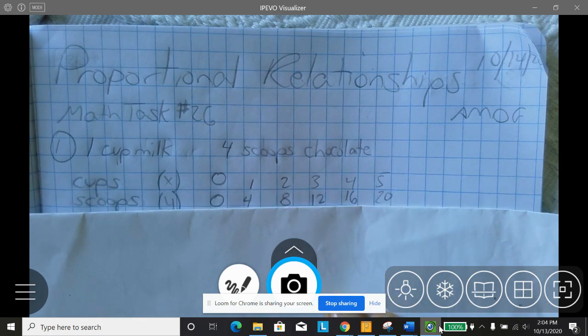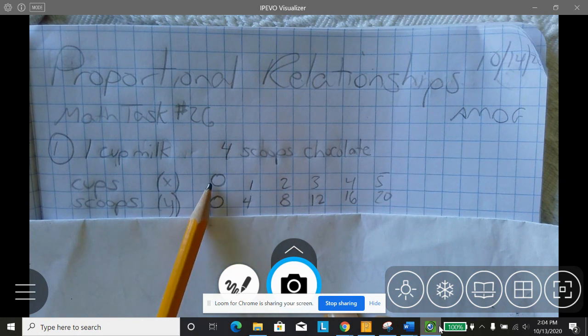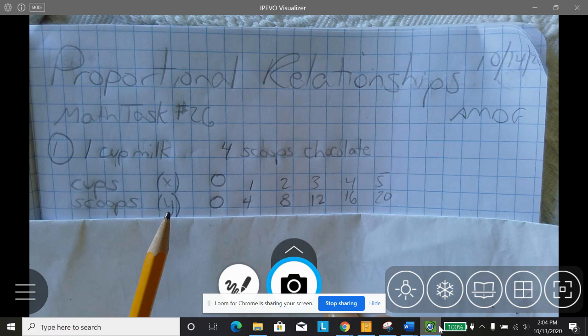After we do that, we're going to make scoops. That is going to match with each number of cups, how many scoops we need. And we're going to call that y, because that's the output, the second number we have.